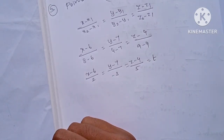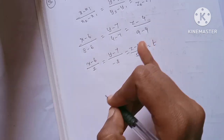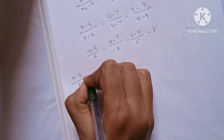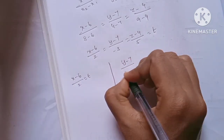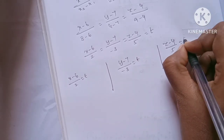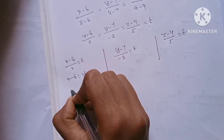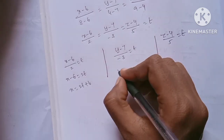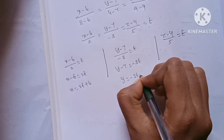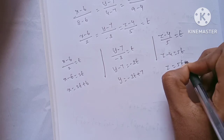So the equation becomes: x minus 6 by 2 is equal to t, y minus 7 by minus 3 is equal to t, z minus 4 by 5 is equal to t. Cross multiplying: x equals 2t plus 6, y equals minus 3t plus 7, z equals 5t plus 4.